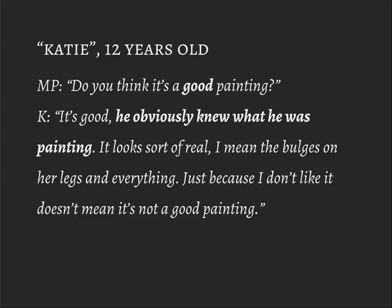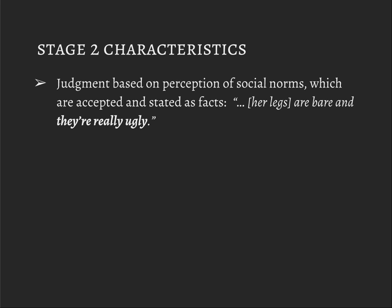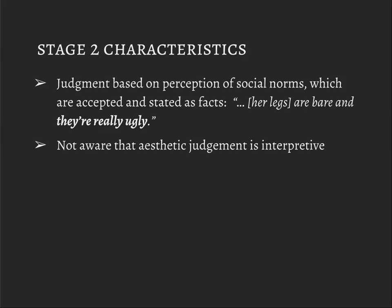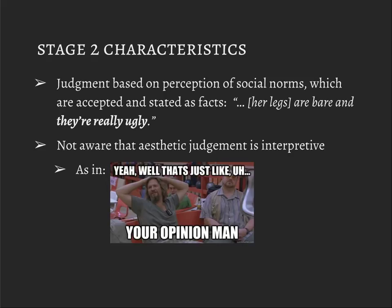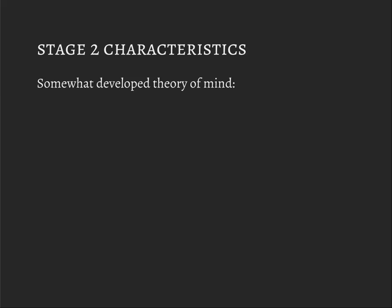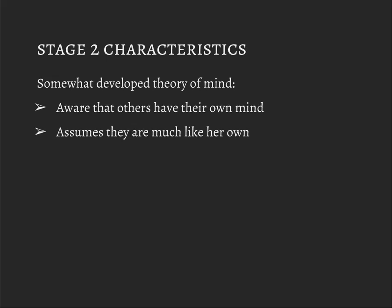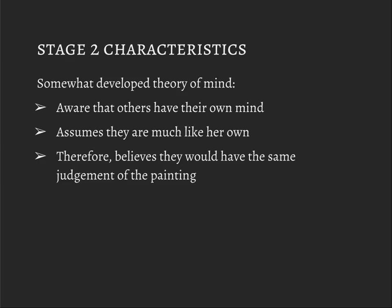Her judgment is based on what she perceives social norms to be at this age — because she's figured those out by now — and they're accepted and stated as facts. There's no hesitation to just say the woman is really ugly, whereas most of us would say, take it easy there. But at that stage, that's normal — you judge harshly like that, because she's not aware that this is interpretive. It's a fact for her. She does have a somewhat developed theory of mind, which is why she understands social norms and knows that others have their own minds. But she still assumes those minds are much like her own — they think in the same way — so she believes they would arrive at the same judgment. That's why she accepts these judgments as facts.